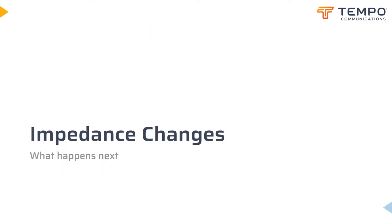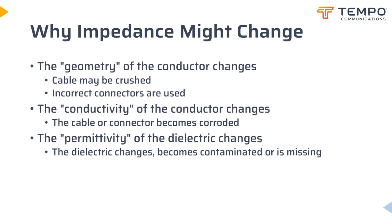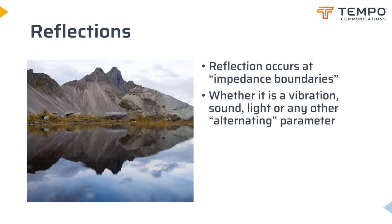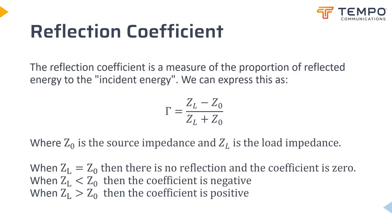Why might impedance change and what happens when it does? The impedance depends on the geometry and the permittivity, and maybe the conductivity if there's a series problem. Whenever you have a wave propagating through a medium, it will continue to travel unimpeded whilst that medium is constant. This applies to waves on the sea, sound in the air, earthquakes through the planet, and in our case electromagnetic waves propagating along a cable. When you get to the bottom of things, the equations are the same.